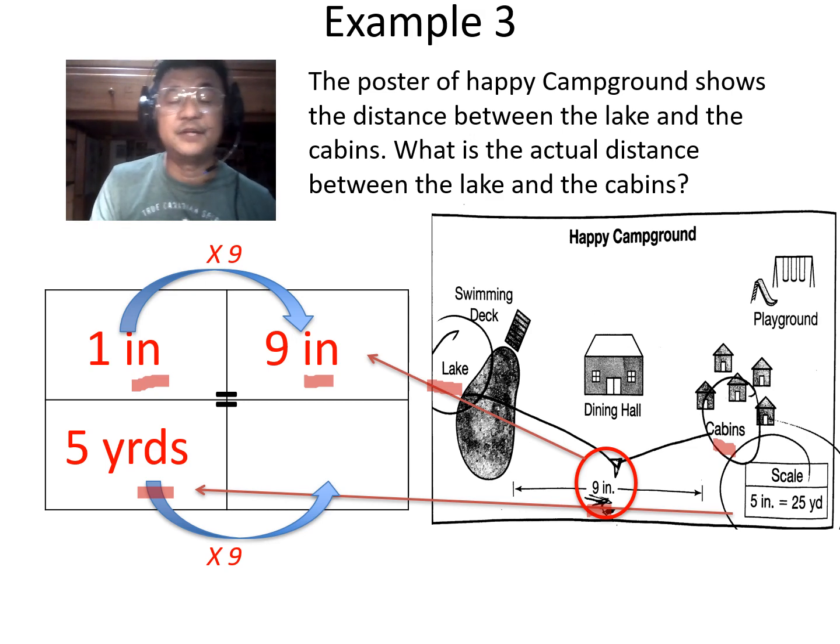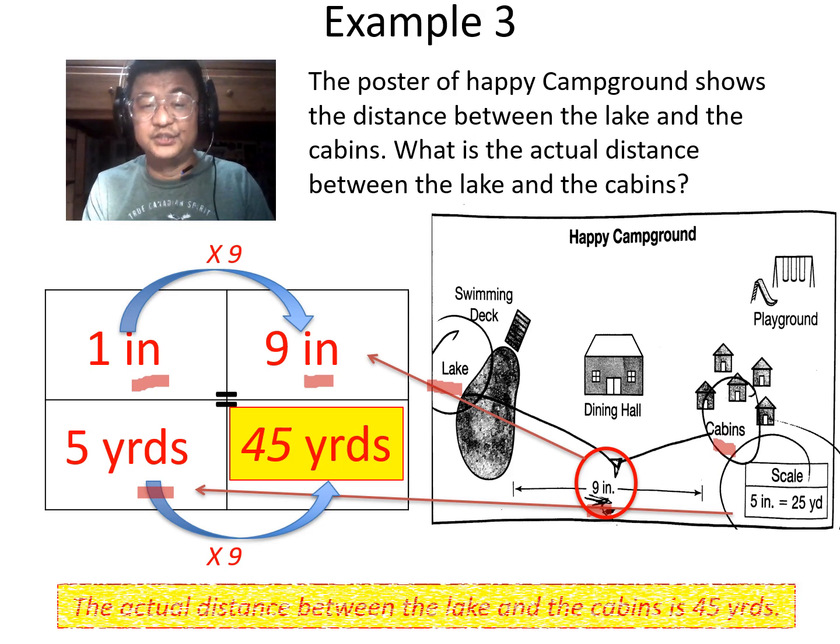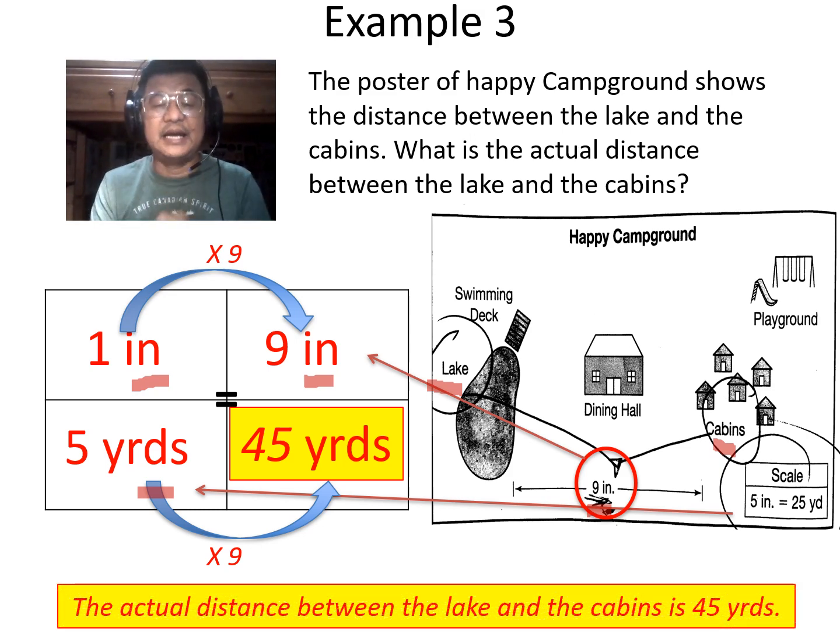Obviously, 1 times 9. Therefore, the bottom is also 5 times 9. And I get 45 yards. So what can I say? The actual distance between the lake and the cabin is 45 yards. Again, this is the use of proportion in order to solve a scale problem.